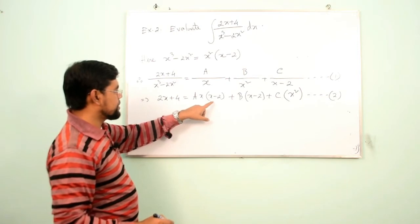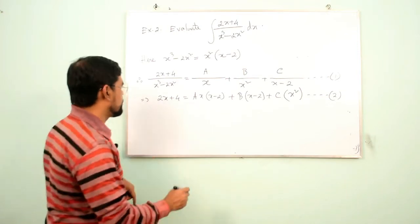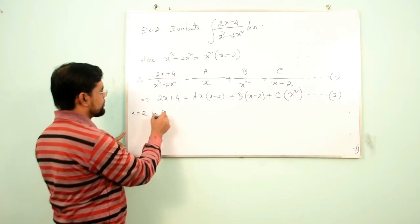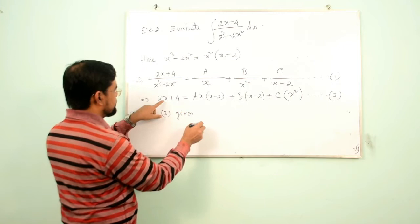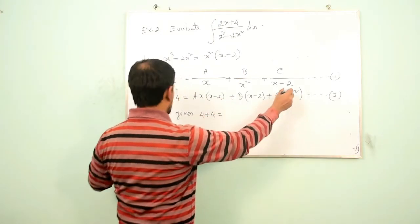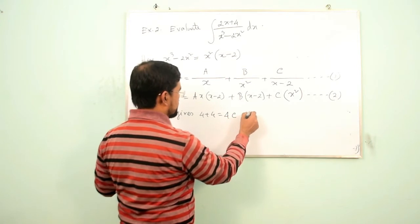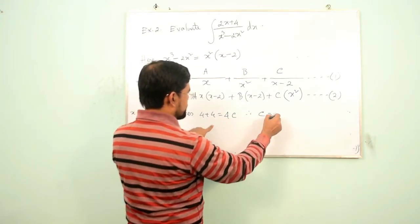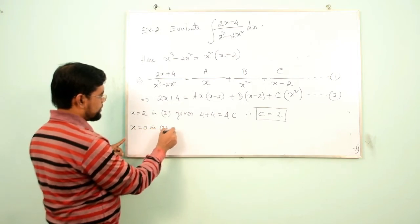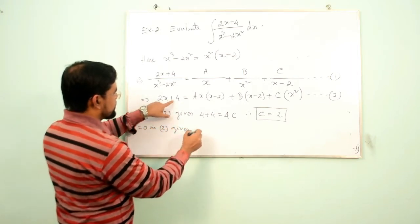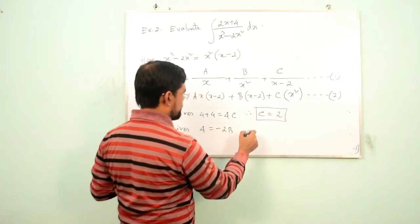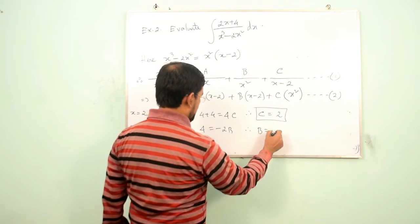To find C, put x = 2 in Equation 2: 4 + 4 = 0 + 0 + 4C, so 8 = 4C, therefore C = 2. To find B, put x = 0: 4 = 0 + B(0 − 2) + 0, so 4 = −2B, therefore B = −2.